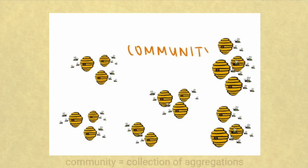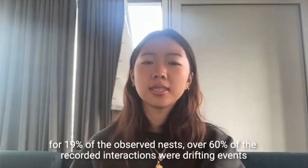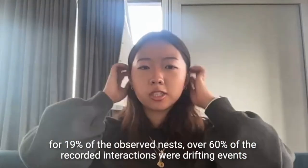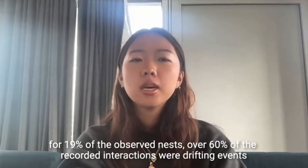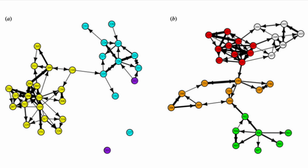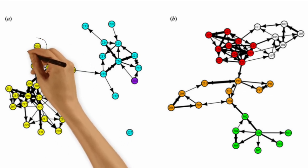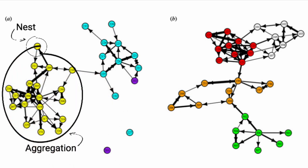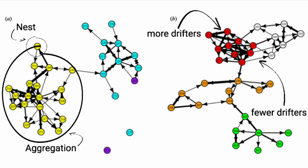Communities are the largest and most complex level, defined as a collection of aggregations exchanging wasps. Scientists realized that the movement patterns between nests stay consistent over time — instead of being random or brief, there are certain paths followed repeatedly. The same colored circles in these diagrams represent different nests in an aggregation, and the connecting arrows are drifting events. A thicker arrow indicates a greater amount of drifters, and it's clear that drifting events are more common within an aggregation than between aggregations.